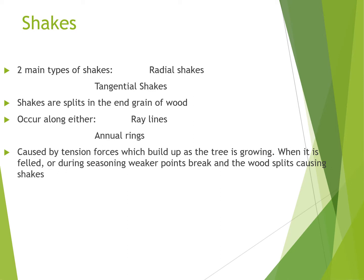Shakes — there are two main types. You've got radial shakes, which radiate out from the center of the tree, or tangential shakes, which go kind of cup-like or circular with the annual rings. Shakes are splits in the grain of wood that occur either in ray lines or with the annual rings — so radial or tangential. They are caused by tension forces which build up while the tree is growing. When it is felled or during seasoning, weaker points break and the wood splits, causing shakes.